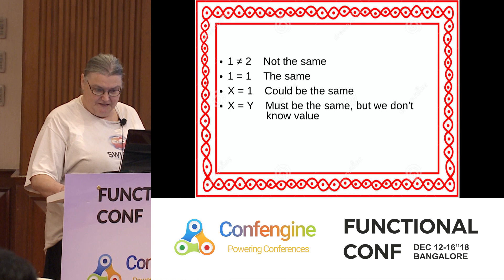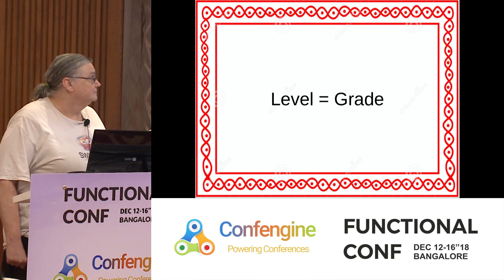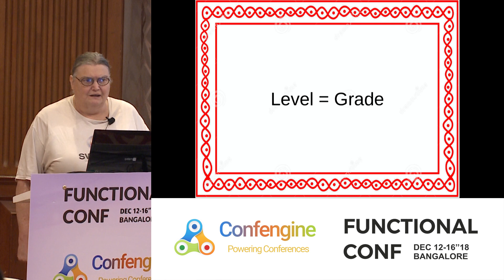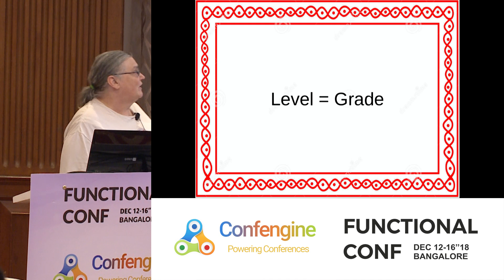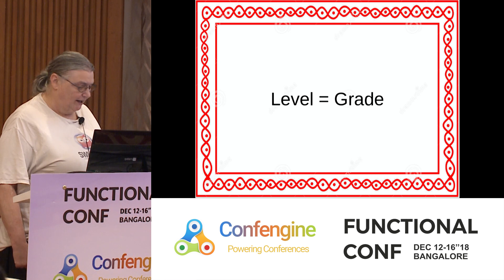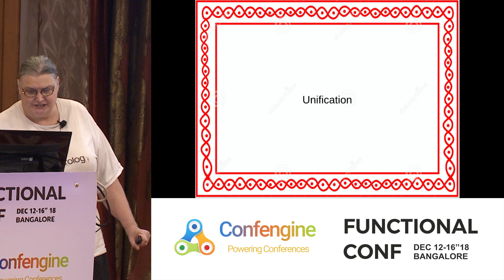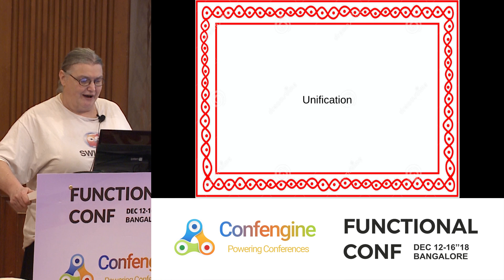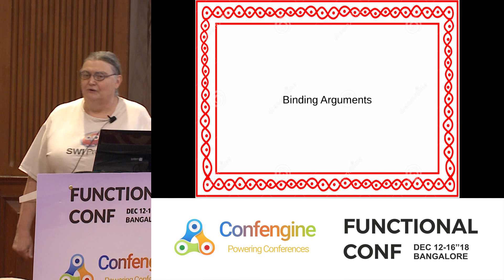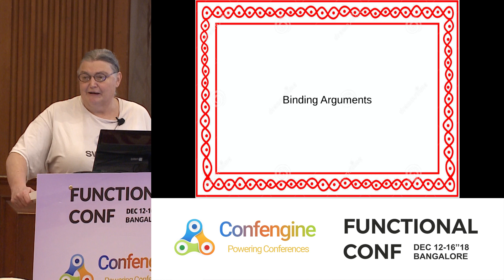This is important because only if these two can be the same should we keep exploring this path. If we've reached the one-equals-two situation, we can't make them the same. But if we could try X being one, then we could try that solution. That allows us to make a kind of search through the space looking for solutions. This whole process of asking whether two things could be the same is called unification.